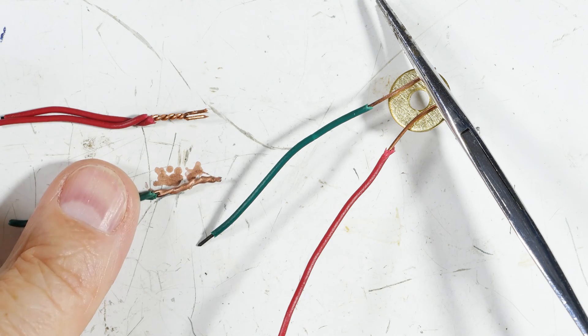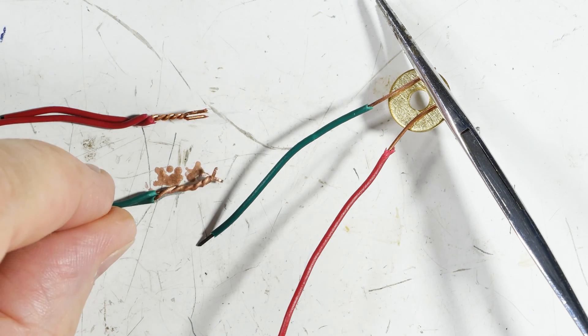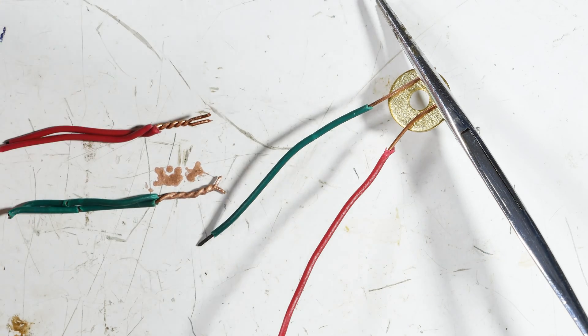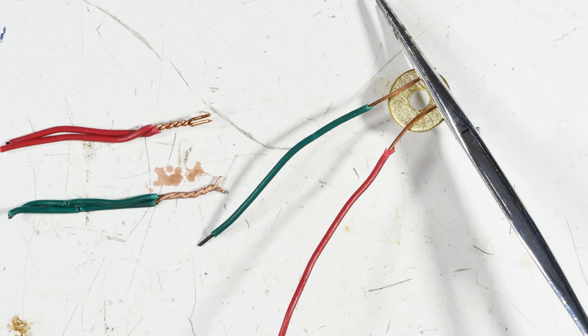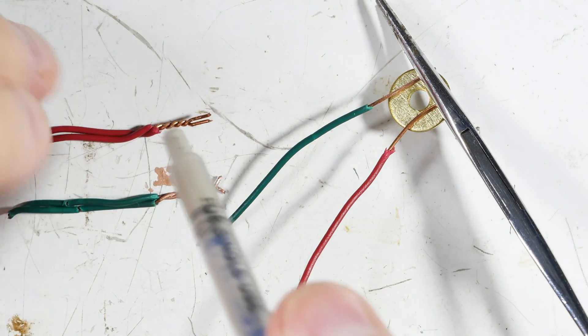Okay, so the two things we're going to be looking for is strength and the other one of course is conductivity. So now we'll try the silver one on the twisted wire.